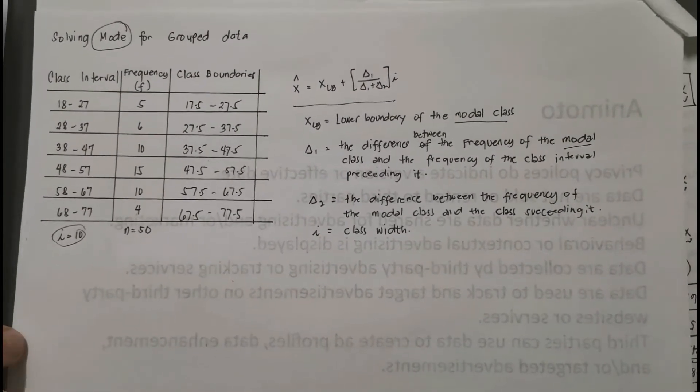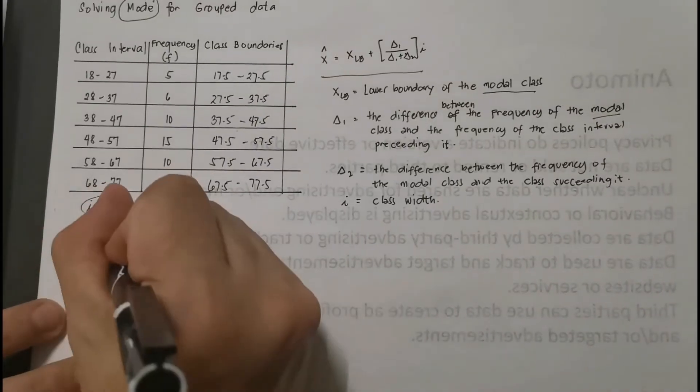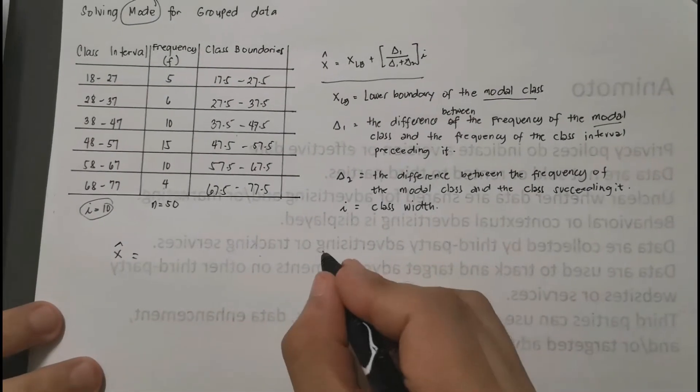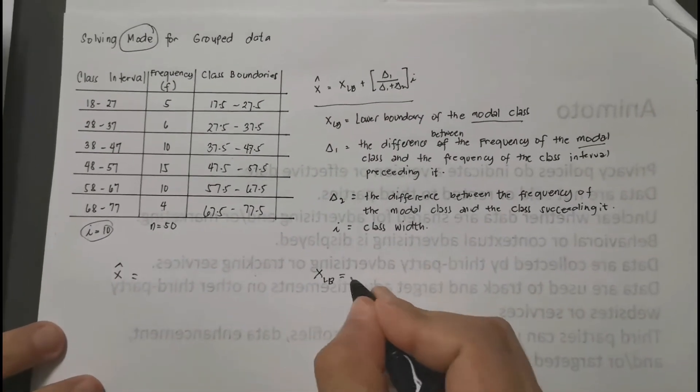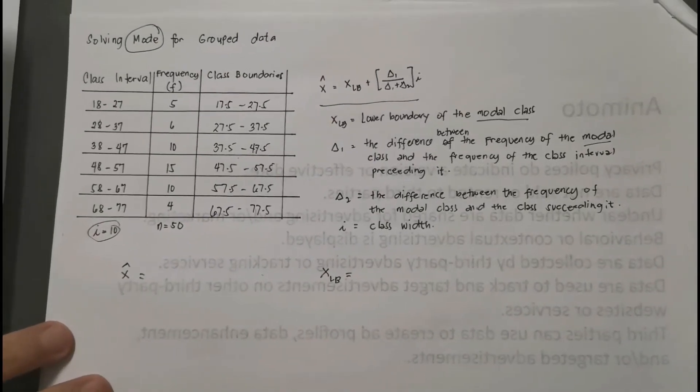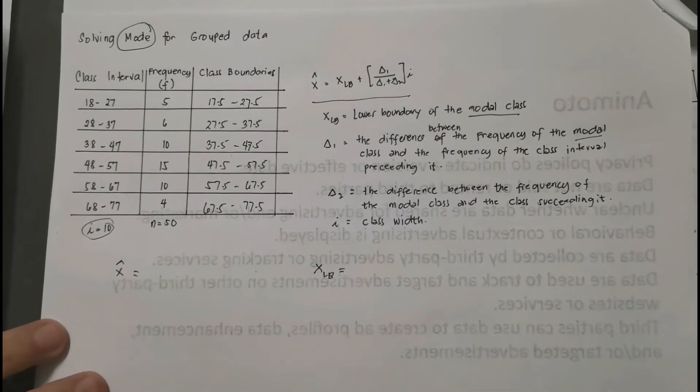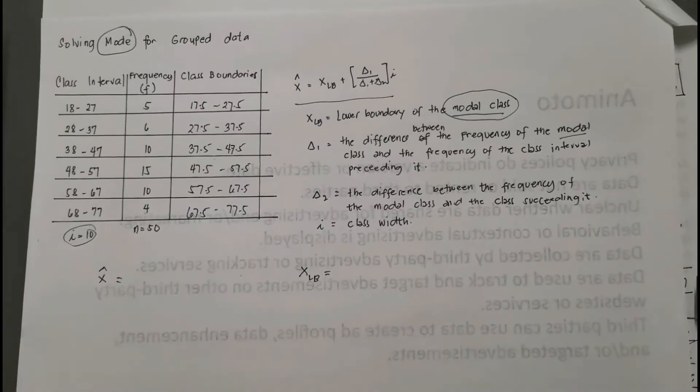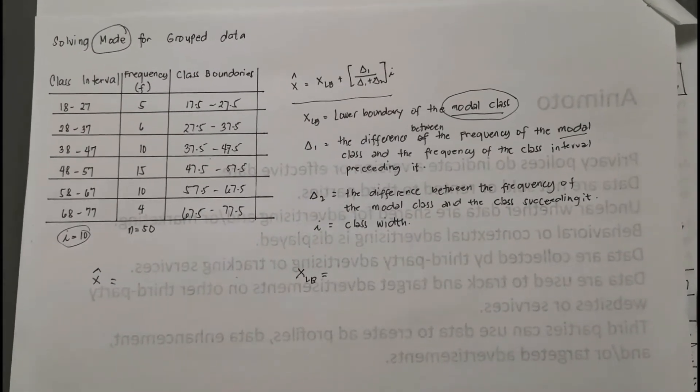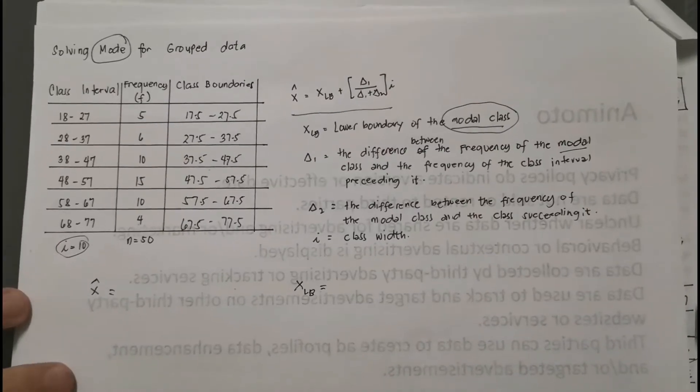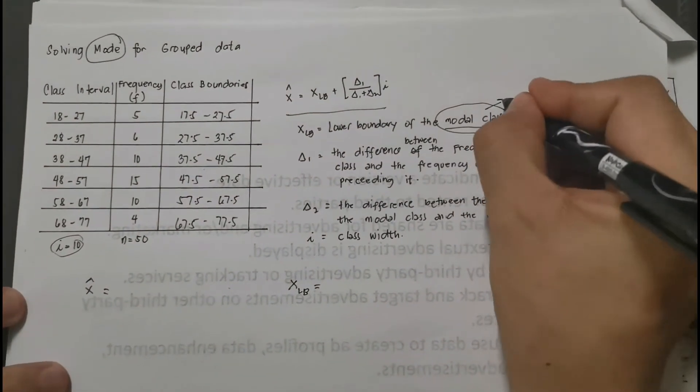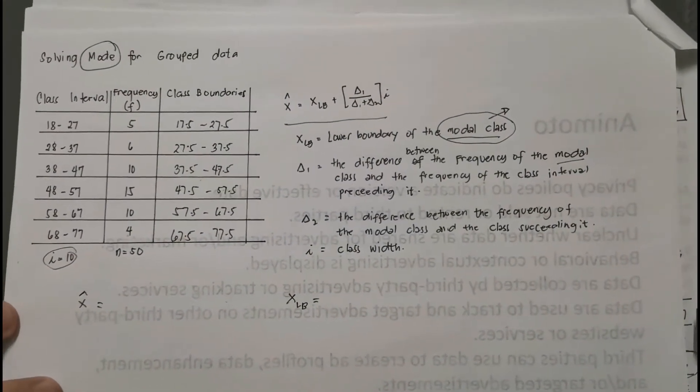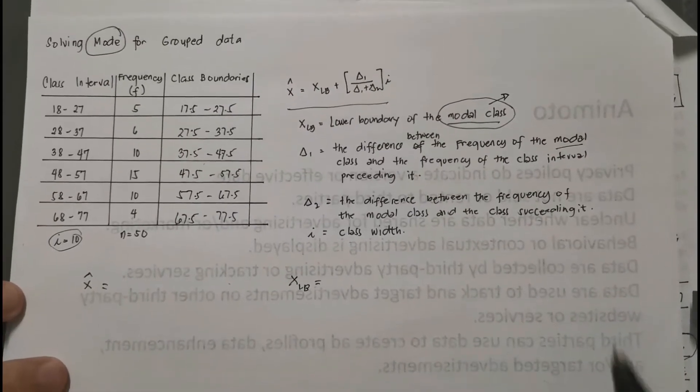So let's start now solving for our mode. Okay, let's start here. Mode, of course, to make it a lot easier, let's identify each beginning with the first variable, x sub lb, lower boundary of the modal class. Hold on, I think we need to resolve first how to find the modal class, or simply the class interval where we expect to find our mode. And to do that, modal class is simply—remember, mode is the most frequently occurring value.